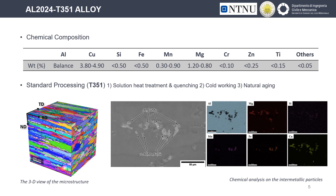The aluminum alloy under investigation is a 2000 series alloy, so its main alloying element is copper, but we also have high concentrations of manganese and magnesium, which are added to improve the quenching properties of the alloy. We investigated the microstructure of the as-received material by means of EBSD and EDS. As a result of standard processing — including solution treatment and quenching, followed by cold-working for stress relief — we have high macrostructural anisotropy, with very large grains elongated along the rolling direction. During the last phase of natural aging, large intermetallic particles precipitate, mainly composed of aluminum-copper-magnesium or aluminum-manganese-iron-silicon.